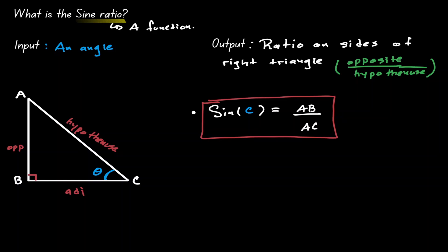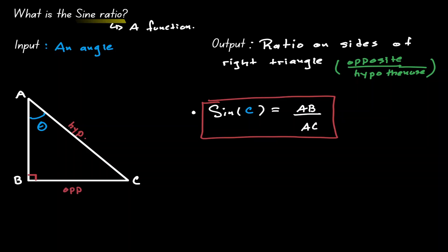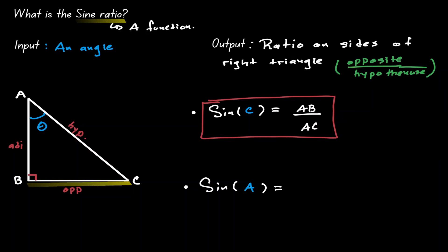Now let's find the sine of angle A. Let's label our triangle: opposite of 90 degrees, that's the hypotenuse; opposite of our reference angle, that's the opposite side; and what is left is the adjacent. So if we look at our function of sine and evaluate it using angle A, we're going to get the opposite divided by the hypotenuse. In this case, our opposite is BC and our hypotenuse is AC.